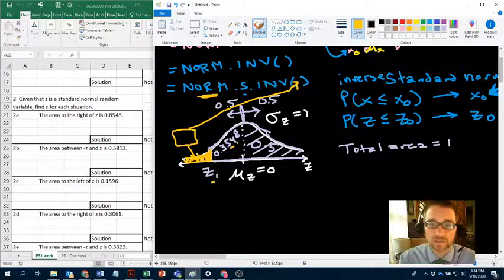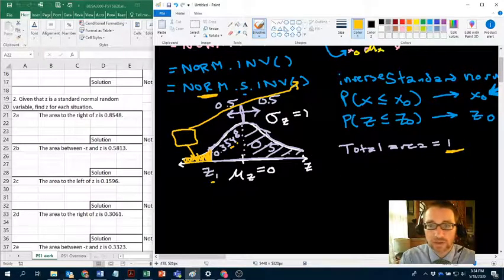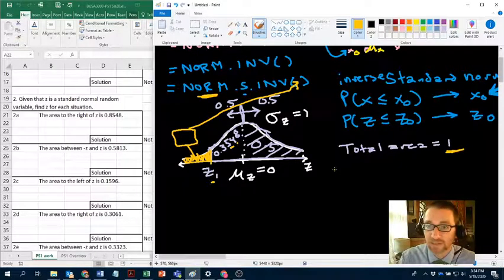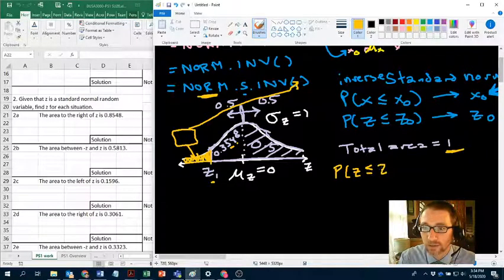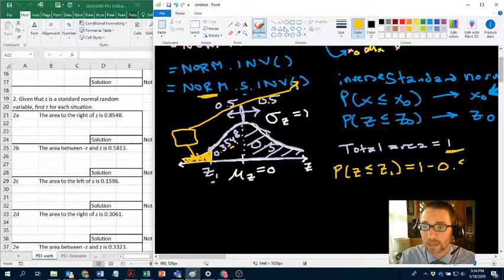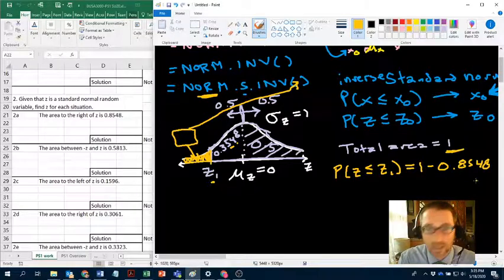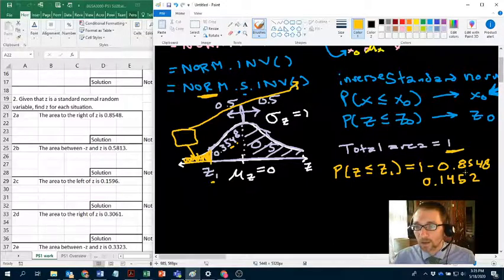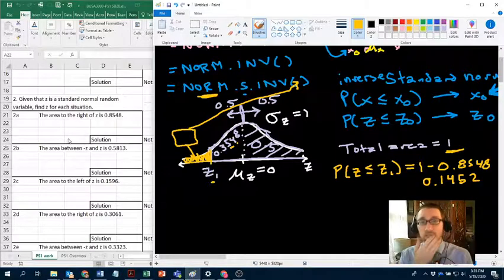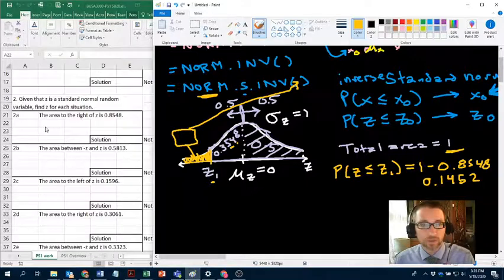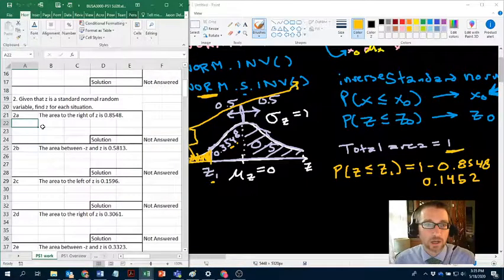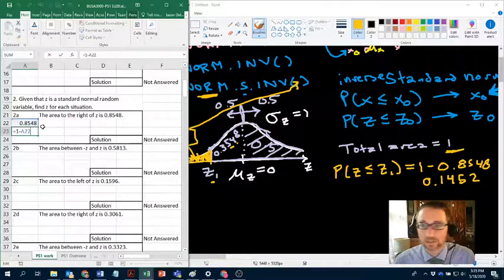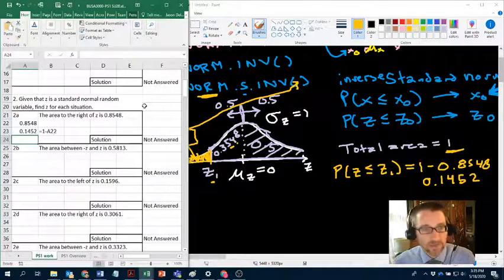Now the thing about norm.inv and norm.s.inv is that they look for the area to the left. Fortunately, the question gives us enough information if we know that the total area is 1. If the total area is 1, and the area to the right of z1 is 0.8548, the complement to that, the probability that z is less than or equal to z1, is going to be 1 minus 0.8548. But Excel is a fantastic calculator. One of the best ways to learn how to use Excel fluidly is to practice doing this sort of calculation in Excel. So we're going to do 1 minus this.